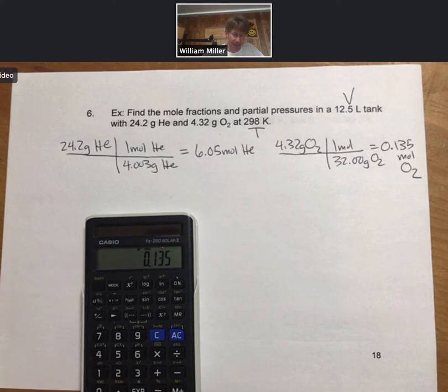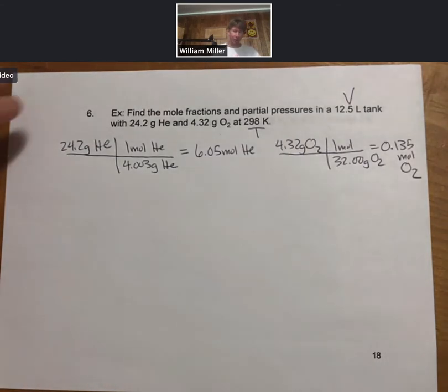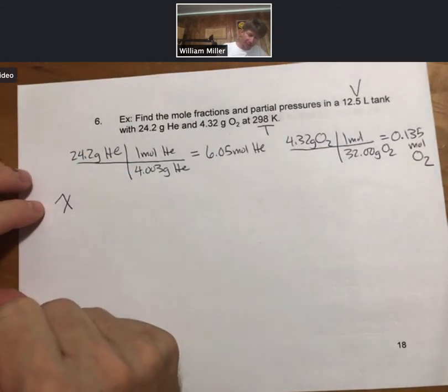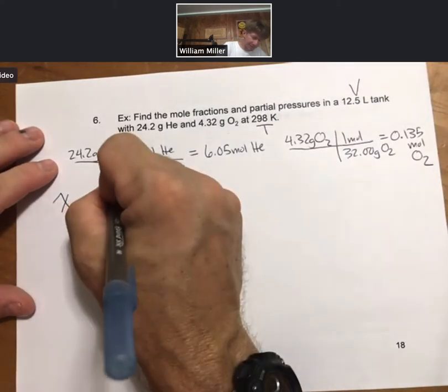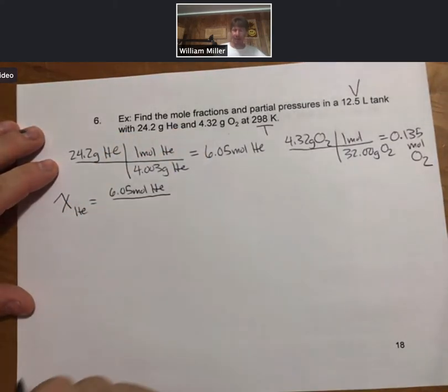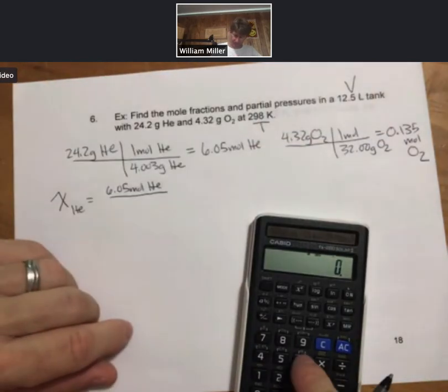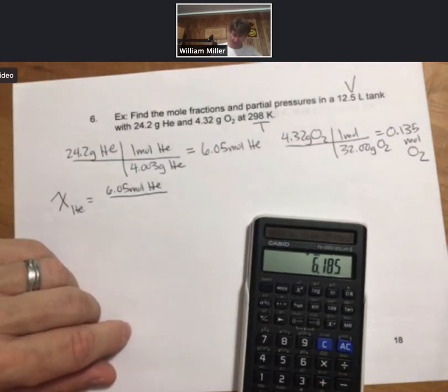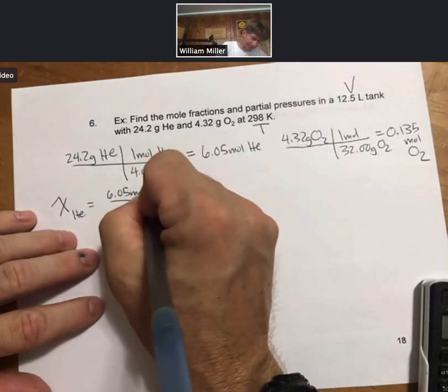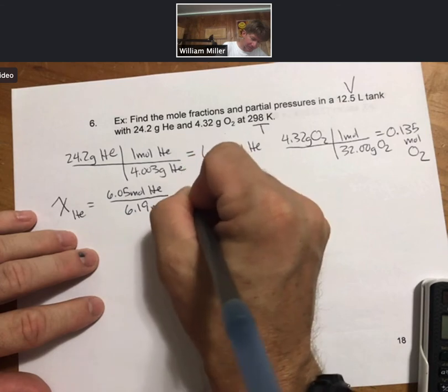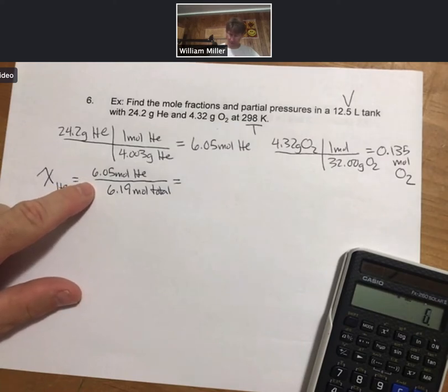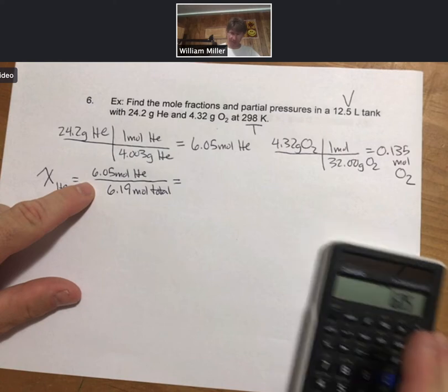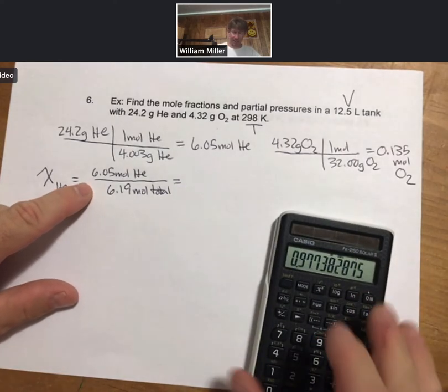Mole fractions. Mole fractions, I know they're new, but let's go ahead and do them first. Mole fraction of helium is going to be moles of helium divided by total moles. I have 6.05 plus 0.135, 6.19 to 3 sig figs. My mole fraction of helium is going to be almost as large as it can get. 6.05 divided by 6.19, 0.977.